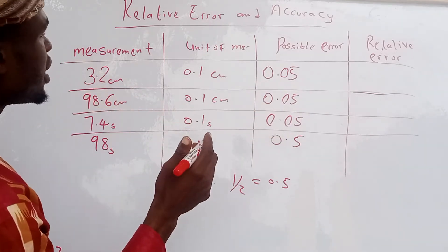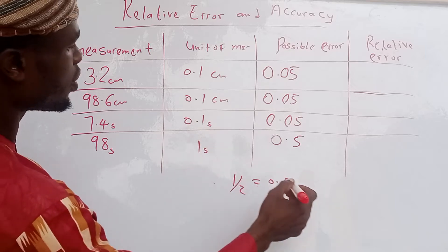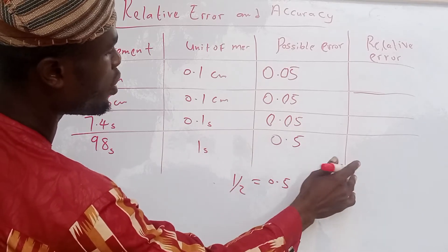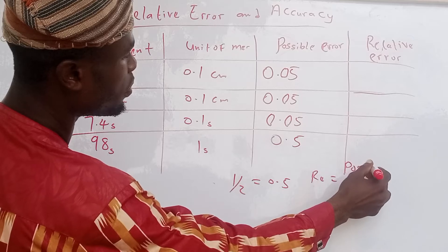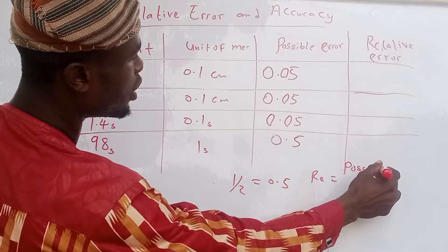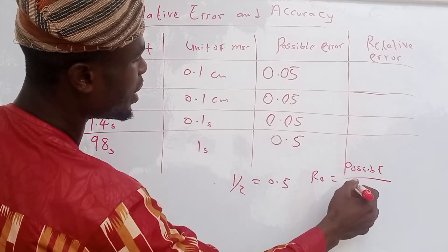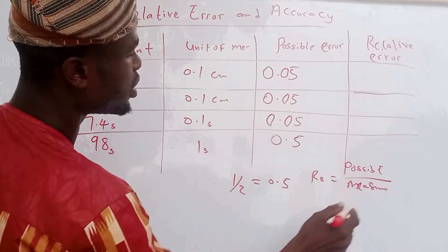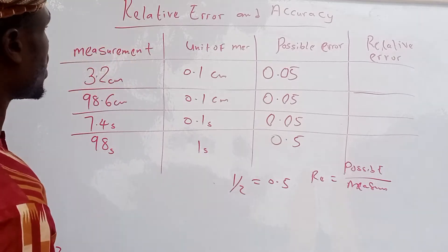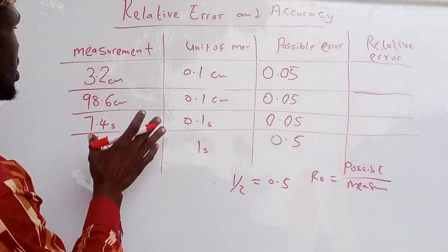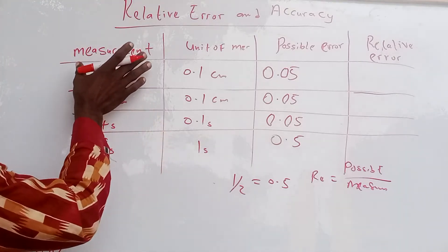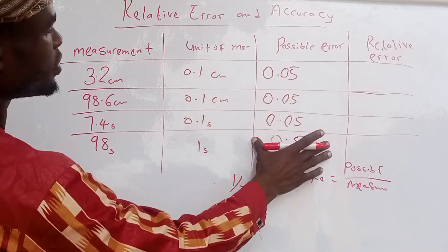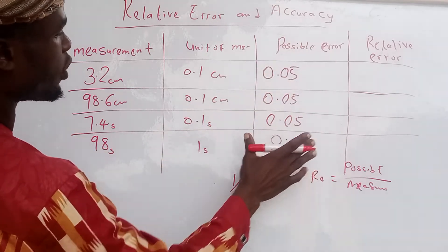Now to find our relative error: relative error equals possible error divided by the mean value. So relative error = possible error divided by the mean value.